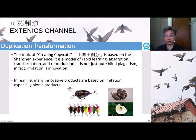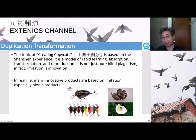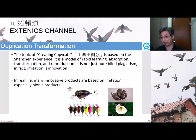We are also talking about creating copycats. The concept is based on the Shenzhen experience — a model of learning, absorption, transformation, and reproduction. It is not just pure blind copying. In fact, imitation is still imitation, but in real life, many innovative products are based on imitation, especially bionic products. You can see some photos where shapes from nature — plants, animals, or anything — are copied to become new products.